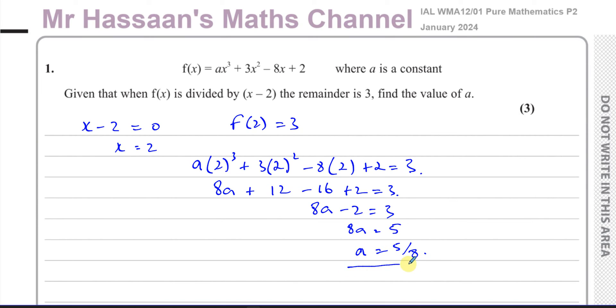a is a constant—it didn't say integer, it said constant—that's fine. So a is 5/8. Let me just check: 2³ is 8, 4×3 is 12, 2×(-8) is -16 plus 2. That's 12 + 2 = 14, minus 16 is -2. Add 2 to both sides, divide by 8. That's quite simple. That's three marks, a very short, quick question for number one. That completes question number one, which is all about the remainder theorem.